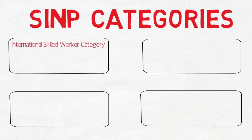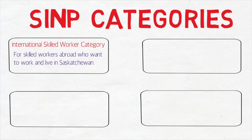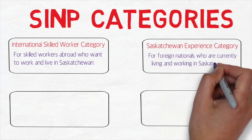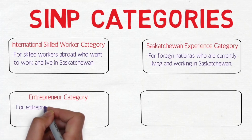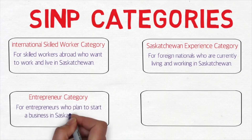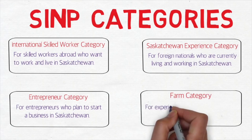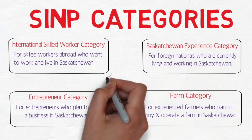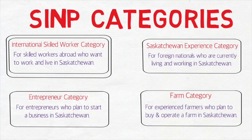Under SINP, we have four categories. First is the International Skilled Worker category, for skilled workers abroad who want to work and live in Saskatchewan. Second is the Saskatchewan Experience category, for foreign nationals currently living and working in Saskatchewan. Third is the Entrepreneur category, for those who want to start a business in the province. Fourth is the Farm category, for experienced farmers who want to buy and operate a farm in Saskatchewan.